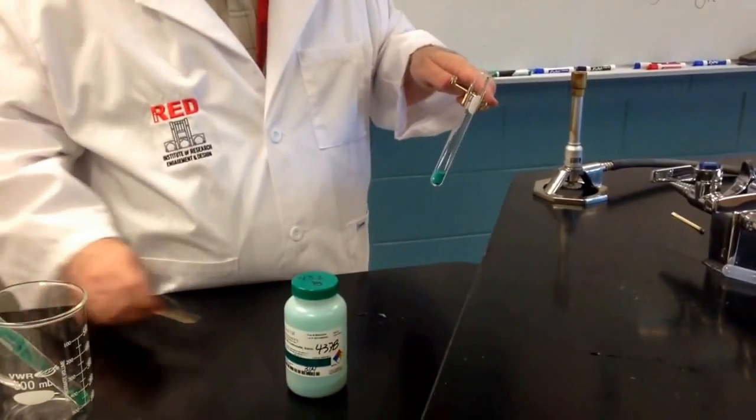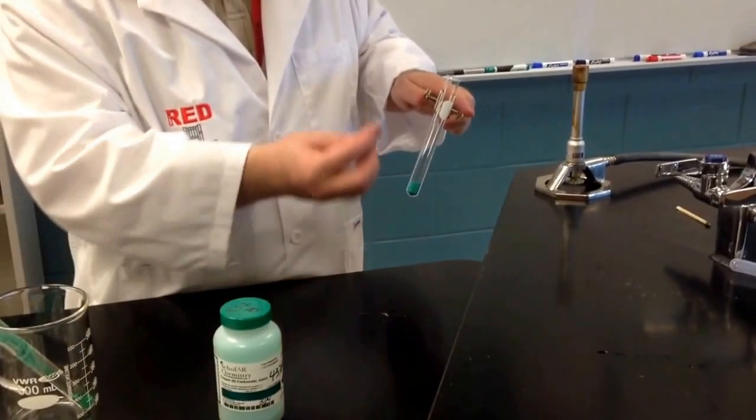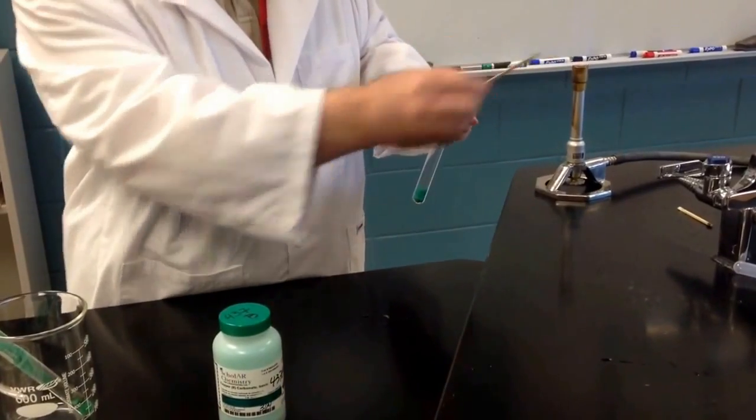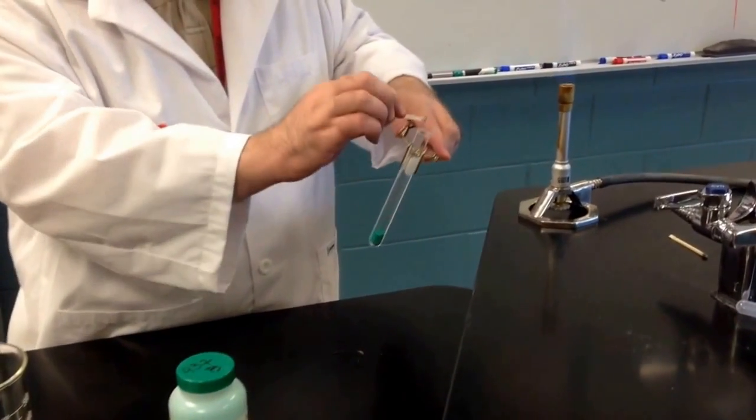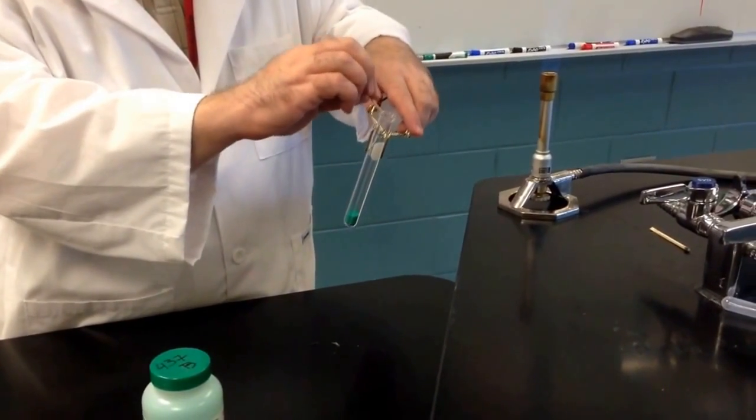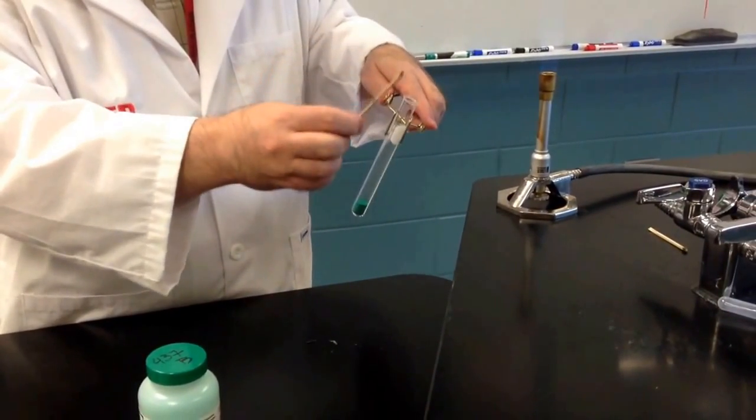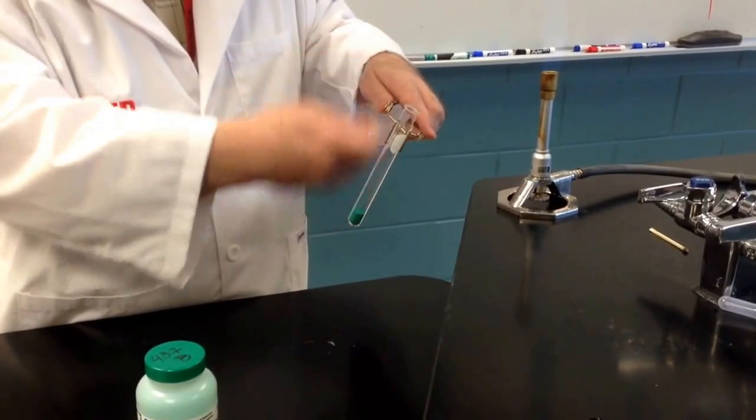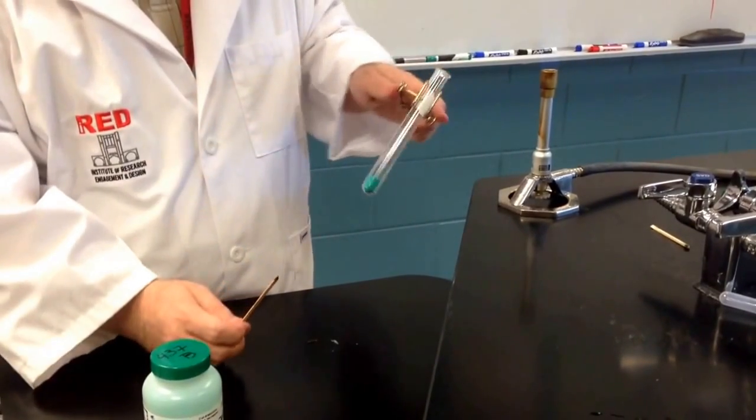And we're going to test for the presence of carbon dioxide by taking a splint, light the splint in the flame, hold the lit splint over the mouth of the test tube. And if this lit splint goes out, that will indicate to us that indeed carbon dioxide is being released during this reaction.